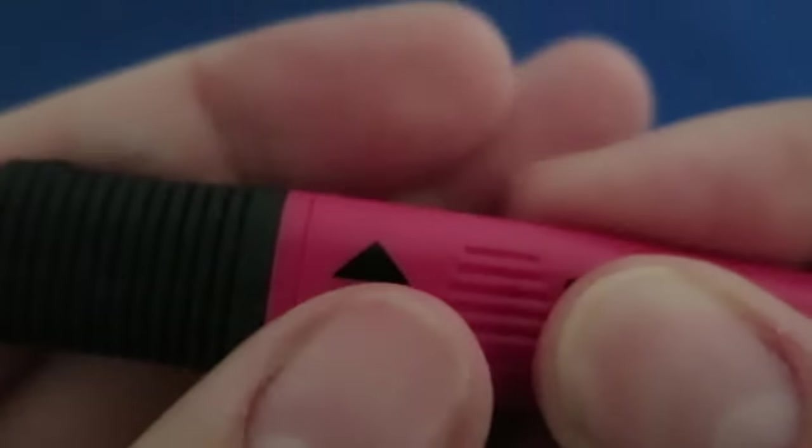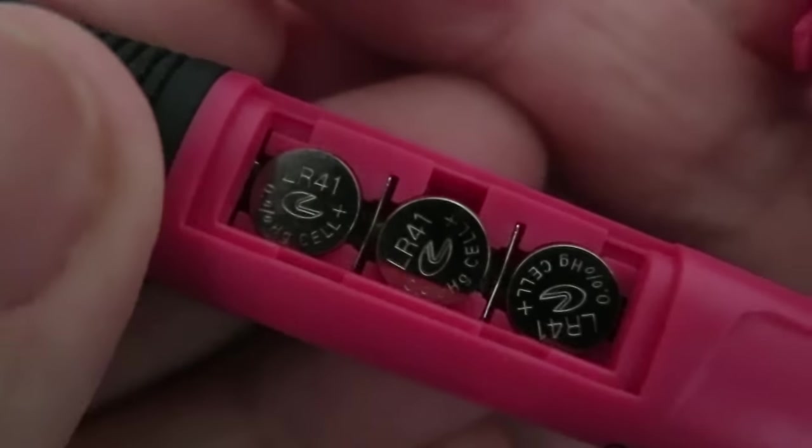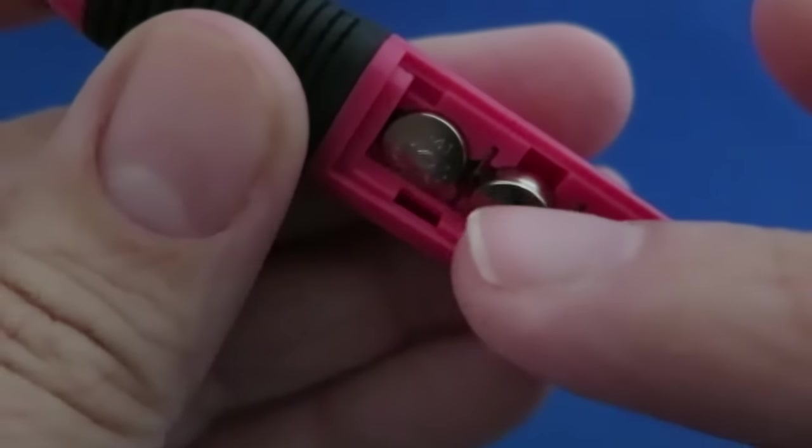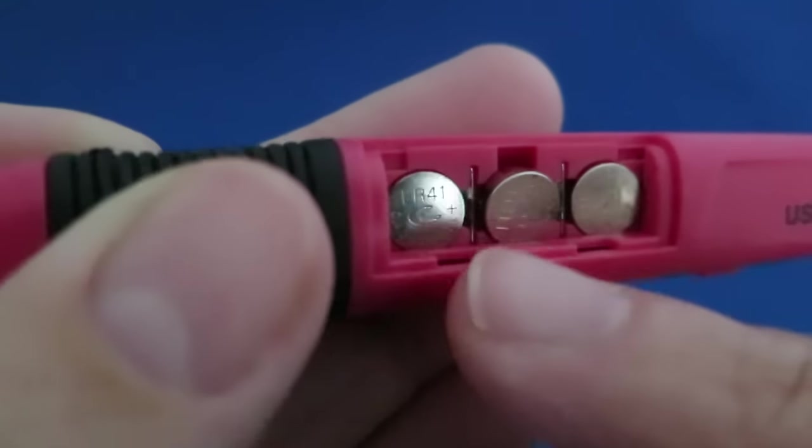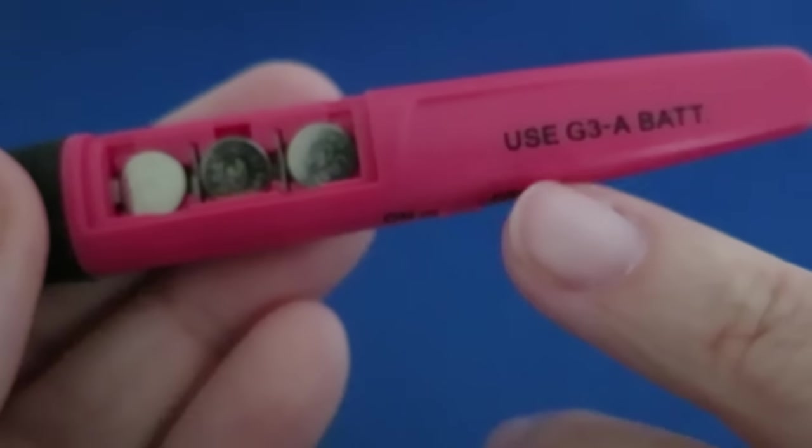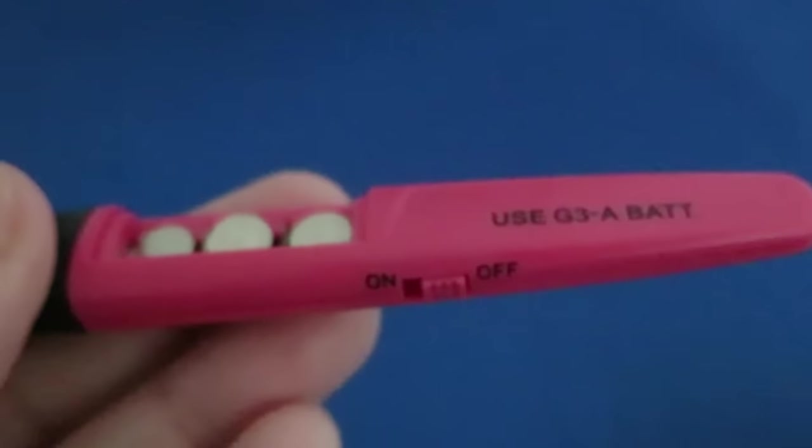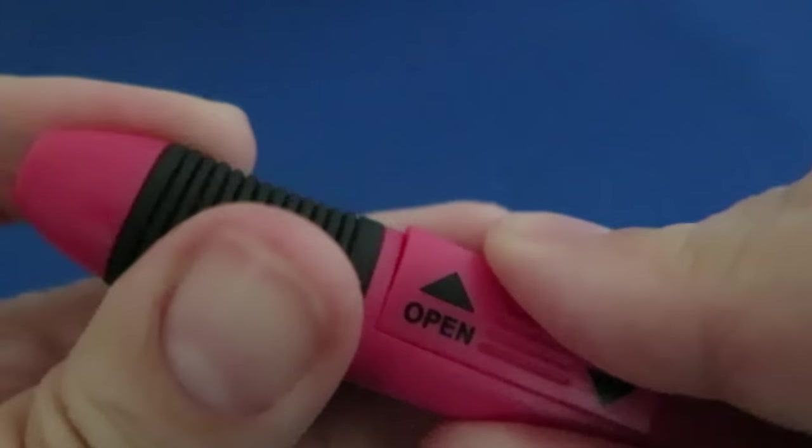So if I just take this case off here, you can see that it takes three of these tiny little batteries, which have had a bad rep in the press recently, but you know, you keep things out of kiddies' ways. Just keep this inside your hook, not anywhere else, and it's AG3A batteries, so that's three of those.